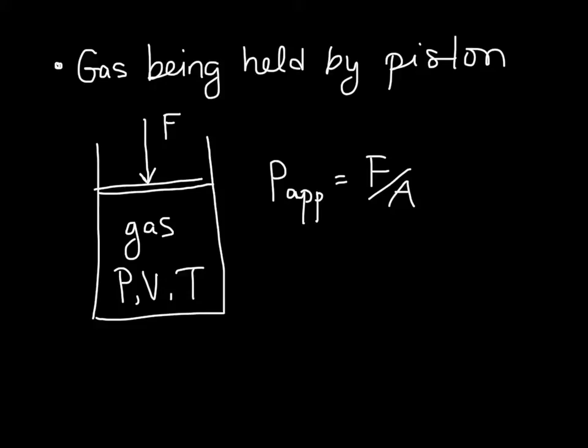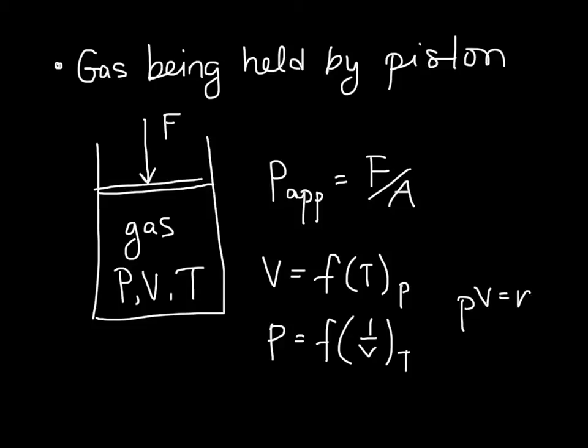We know that we can either say that the volume of what's in here is a function of temperature at constant pressure, or that the pressure is a function of one over V at constant T. This is just governed by the ideal gas law, PV=nRT. We can think of pressure from an atomic perspective, where the pressure that's being generated here is from the gas molecules knocking into the piston. So that's an example that you're probably familiar with in terms of equilibrium.